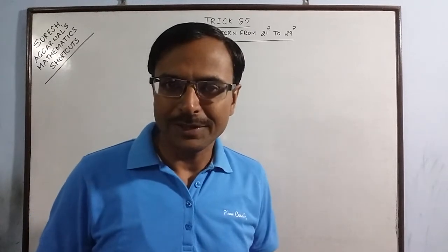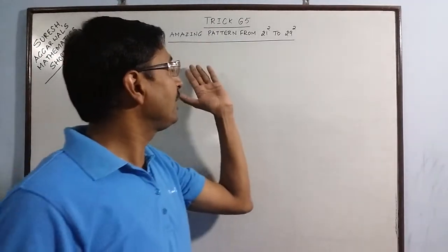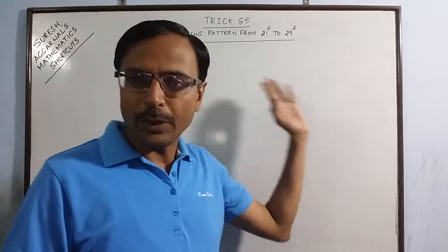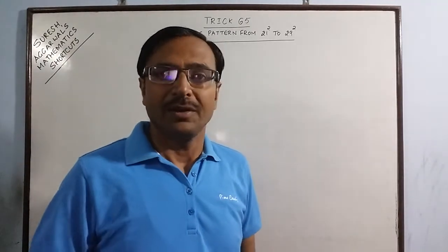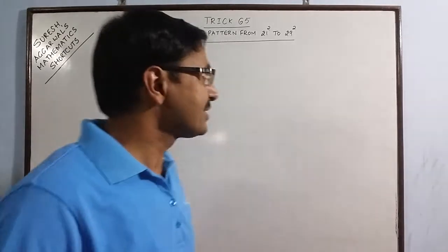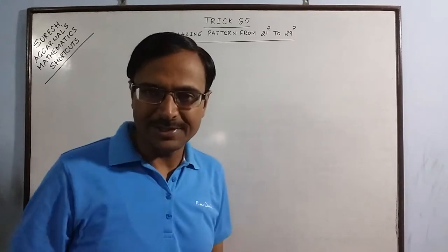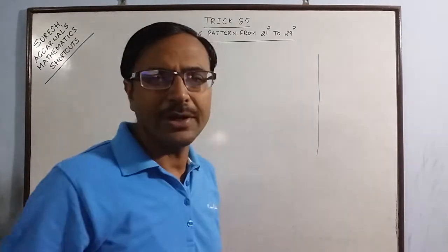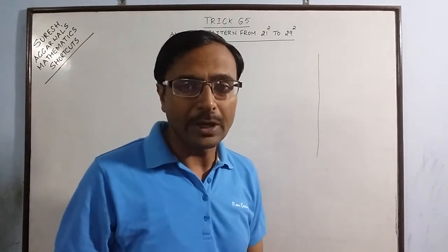Hello, this is Dr. Suresh Agarwal bringing you another amazing trick in which we will find a unique pattern when we square numbers from 21 to 29. You will be really amazed to see this pattern and for this we need to know how do we square numbers containing two digits. Now let me take just one minute to demonstrate how we can find the square of any two digit number orally first.